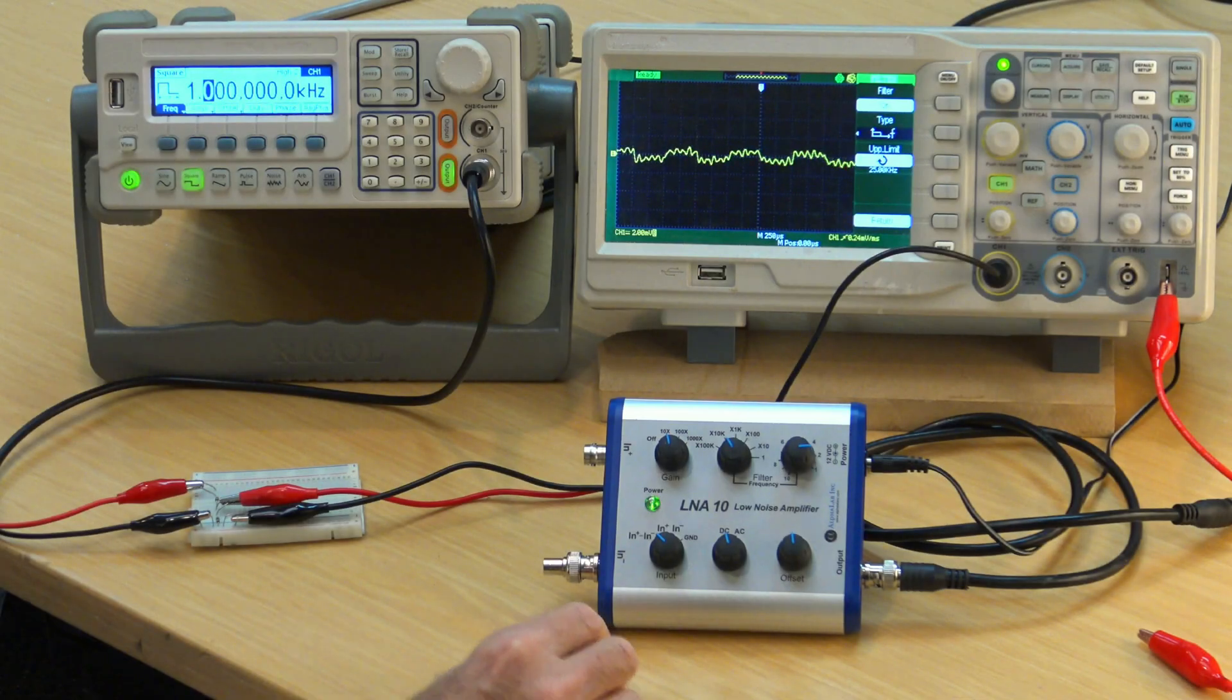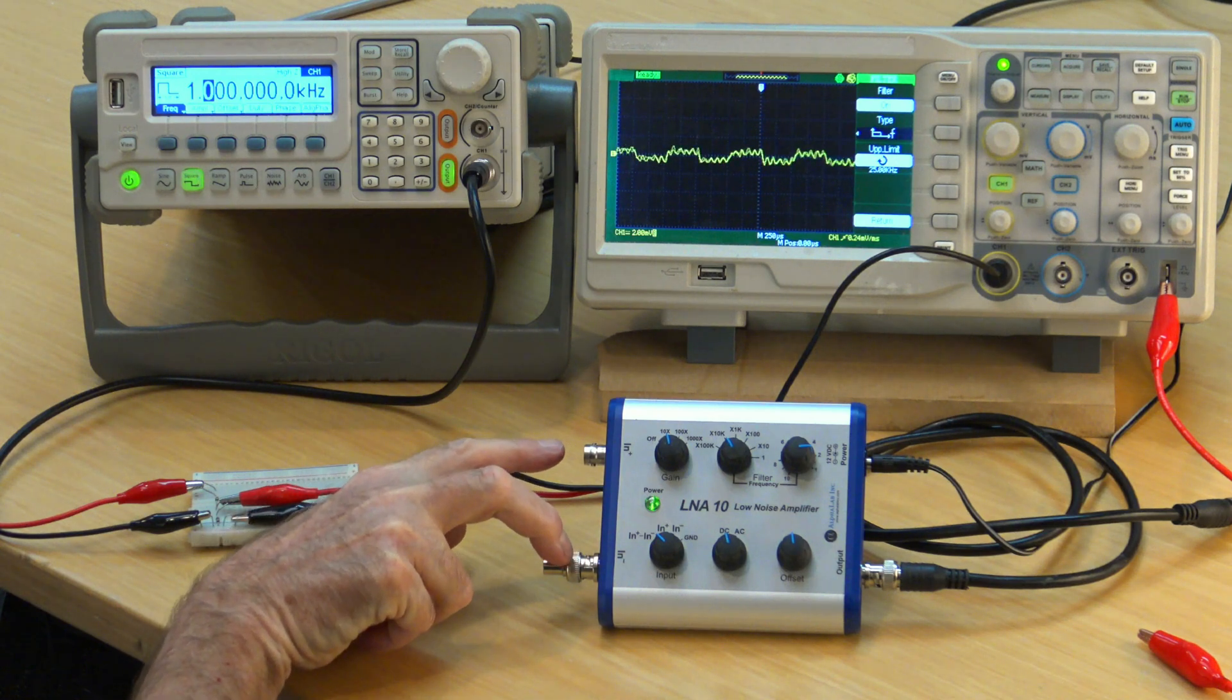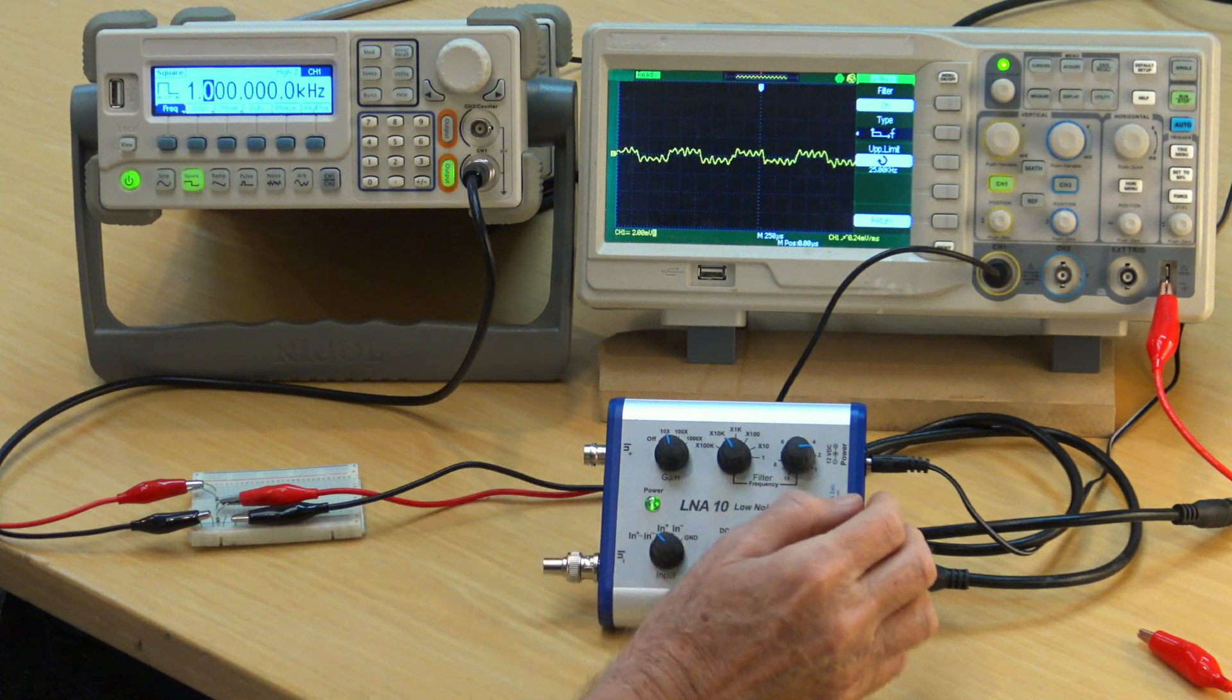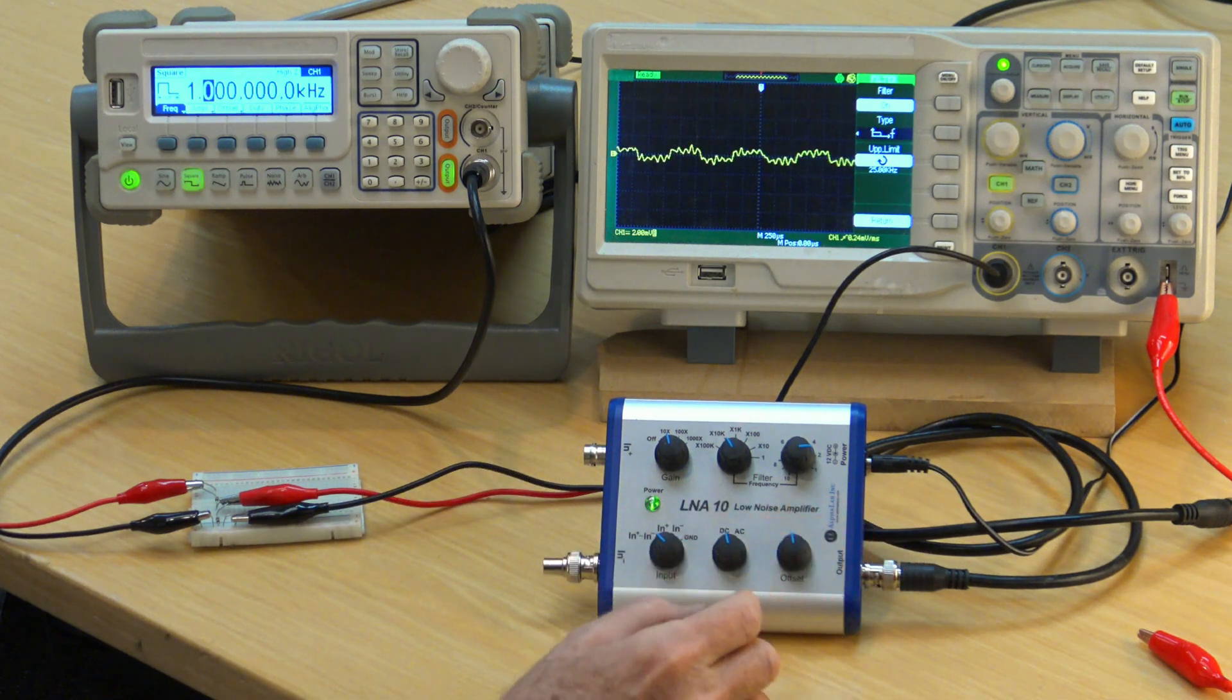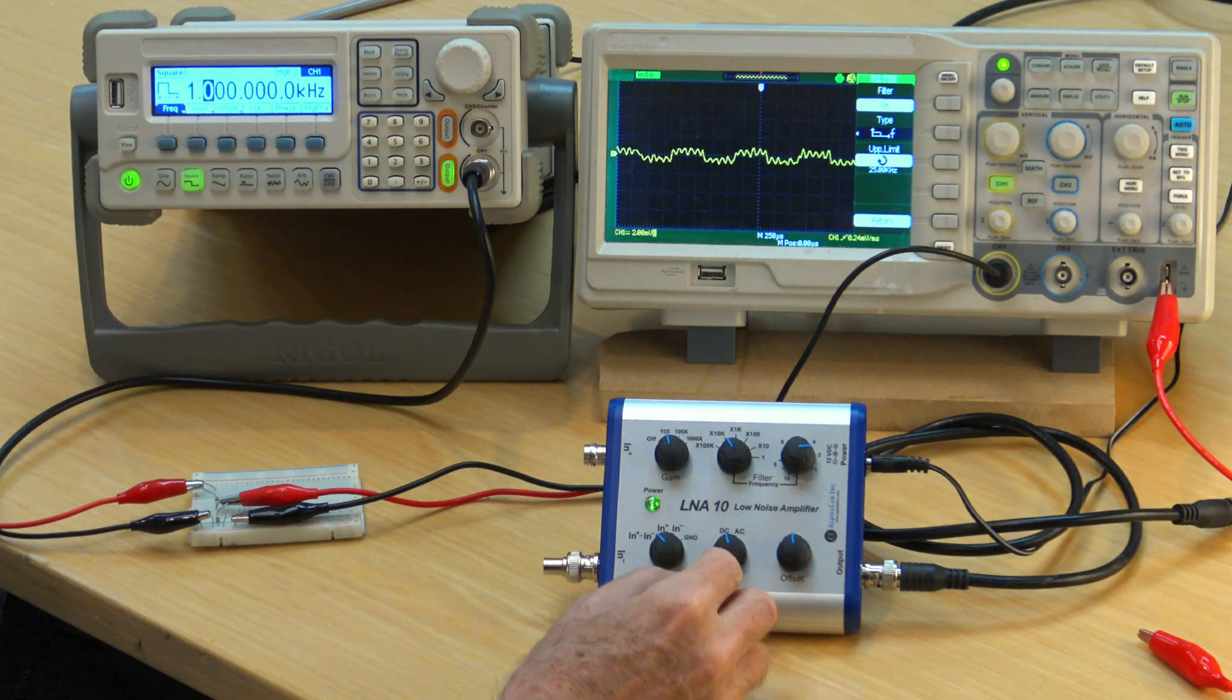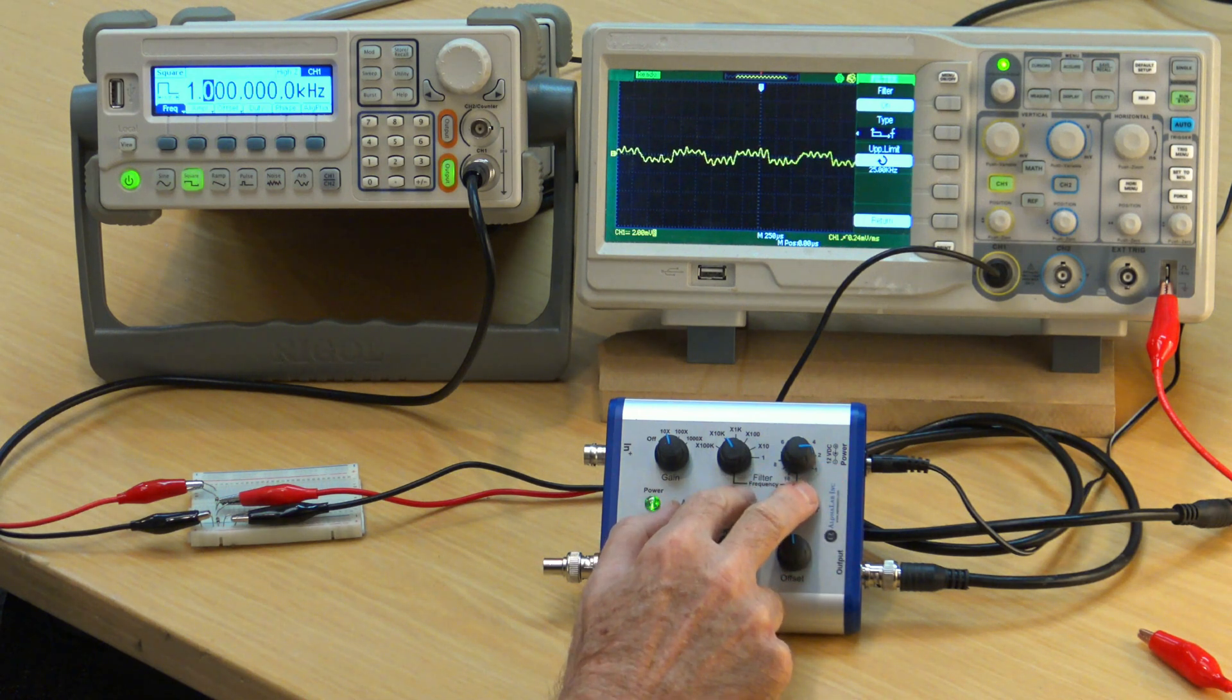It features two input amplifiers that are matched to within one one-thousandth of a percent. Also there's good isolation between the input grounds and the output ground and the amplifiers have very low intrinsic noise of about four nanovolts per root Hertz. It includes a tunable low-pass filter from one Hertz to one megahertz.